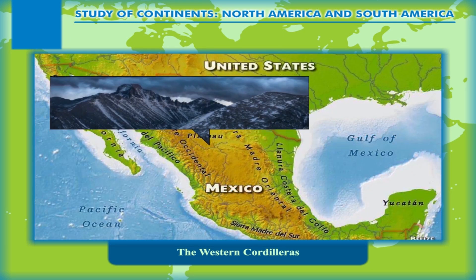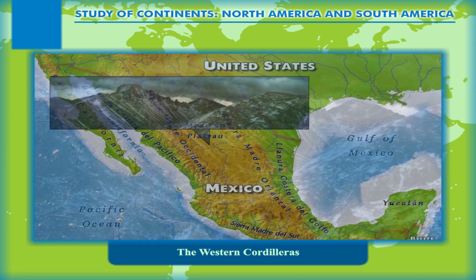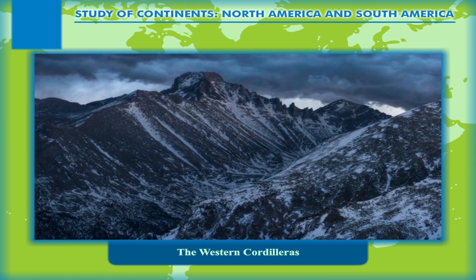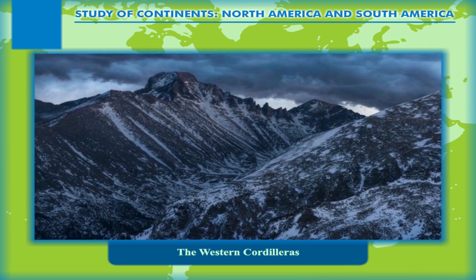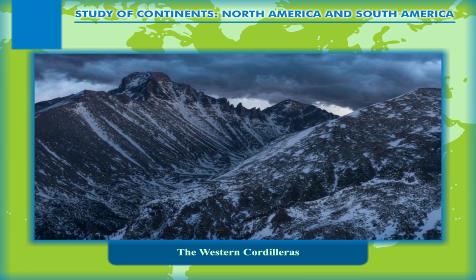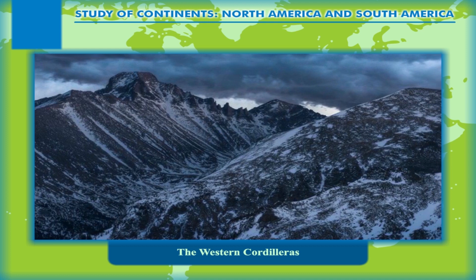Sierra Madre Occidental is a part of the two ranges into which the Rocky Mountains divide in Mexico. The other range is the Eastern Sierra Madre, or Sierra Madre Oriental, that lies towards the Gulf of Mexico.